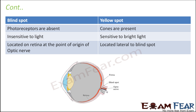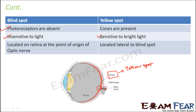Blind spot and yellow spot. The blind spot does not have any photoreceptors, which is why no light can be sensed there. The yellow spot is another name for the fovea, where only cones are present and no rods. So the blind spot is completely insensitive to light, whereas the yellow spot is sensitive to bright light only, not dim light, because dim light requires rods which are absent there. Location-wise, the blind spot is where the optic nerve originates, and the yellow spot is located lateral to the blind spot.